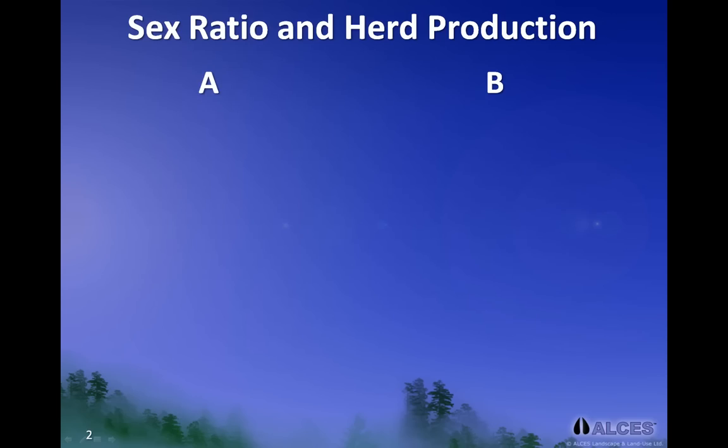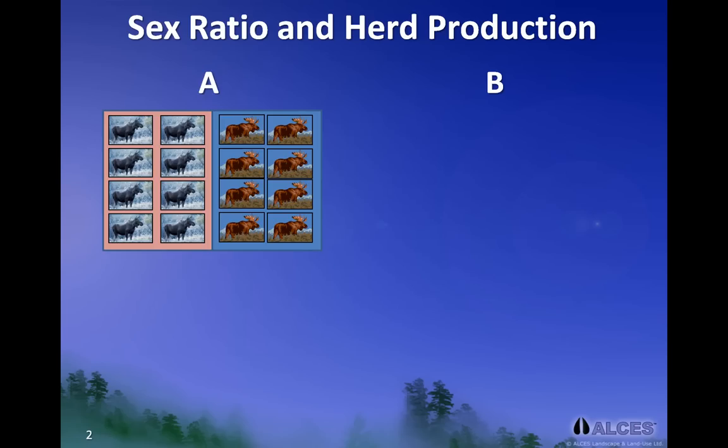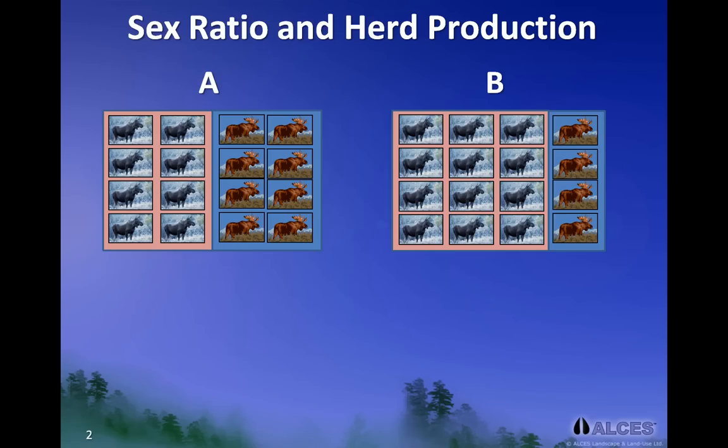To illustrate the importance of sex ratio, we will compare two hypothetical moose populations, populations A and B. Here, each picture of a cow or bull represents 10 adult female or male moose in the population. Therefore, both populations live in a habitat that can support 160 moose.